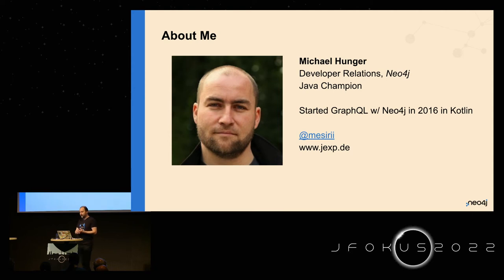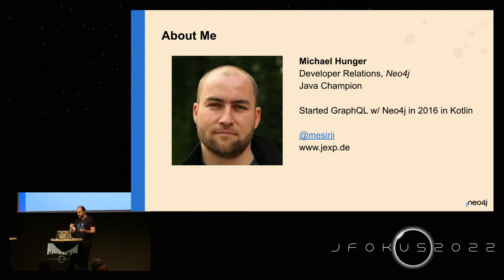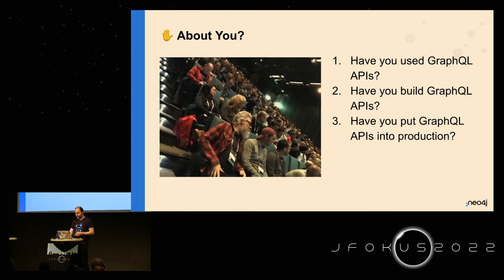I'm Michael. I've been with Neo4j for 12 years now. I'm a Java champion, so I do a lot of Java user groups, articles, and conference talks. I actually started using GraphQL with Neo4j in 2016 with Kotlin, because Kotlin is really great for language transformations and streaming processing of data and structures. The new integrations are built in JavaScript, but Kotlin was a great choice back then, so I definitely recommend it for things like this.